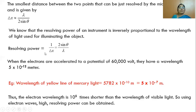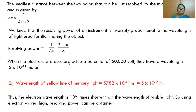Thus, electron waves can be used to get high resolving power. In the formula, resolving power equals 2 sin theta by lambda. If the wavelength is very small, the resolving power of the instrument becomes very high. This is why the electron beam is superior to visible light, and this microscope that uses an electron beam for illumination is named the electron microscope.